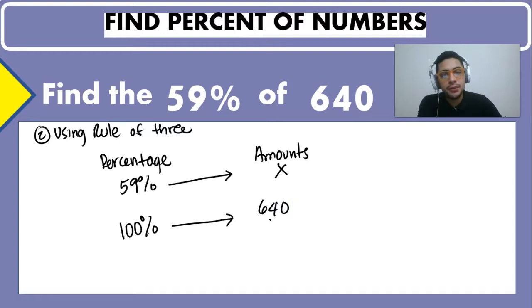So as we learned with the rule of three what we can do is that we can cross multiply. So we multiply the 59% times 640 and a hundred percent times X.